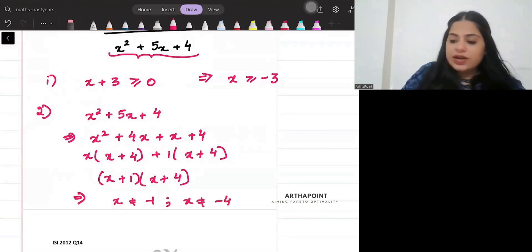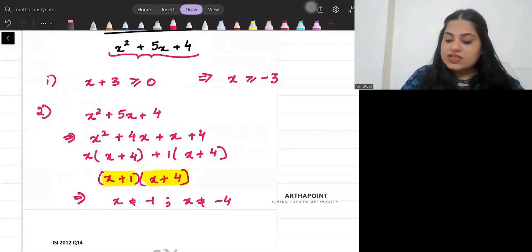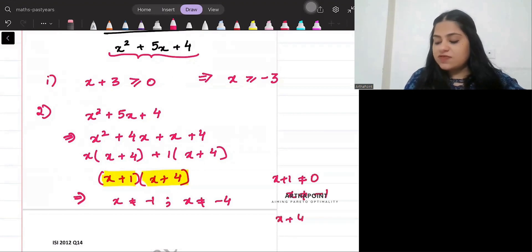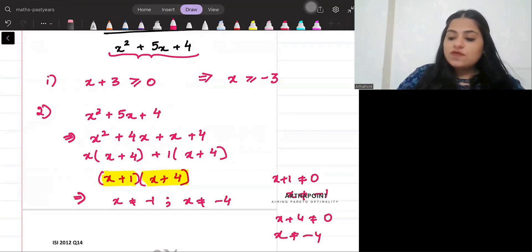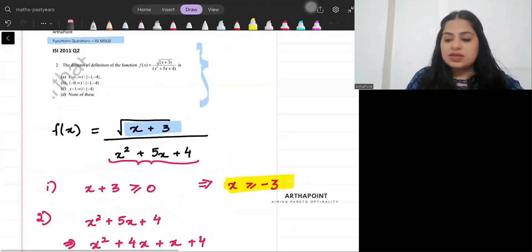We know that denominator cannot be 0. So this means that x cannot be minus 1 and x cannot be minus 4. Denominator is 0, so this can't be 0 and this can't be 0. So x plus 1 cannot be 0, so x cannot be minus 1 and x cannot be minus 4.